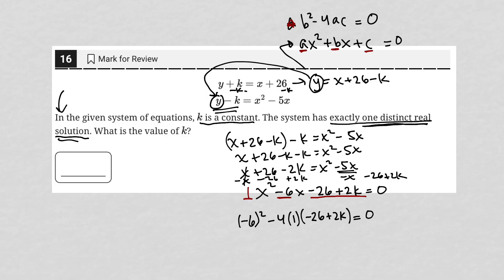Now for some more simplification, negative 6 squared is 36. Negative 4 times 1 is just negative 4. Negative 4 times negative 26 is positive 104. And then negative 4 times positive 2k is a minus 8k. That's equal to 0.